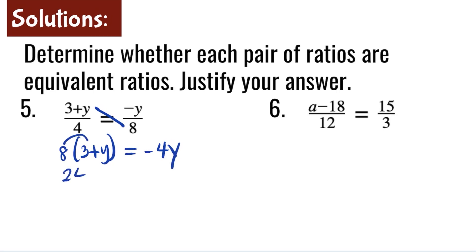Now we need to do distributive property. 8 times 3 is 24. 8 times y is 8y. This is equal to negative 4y.